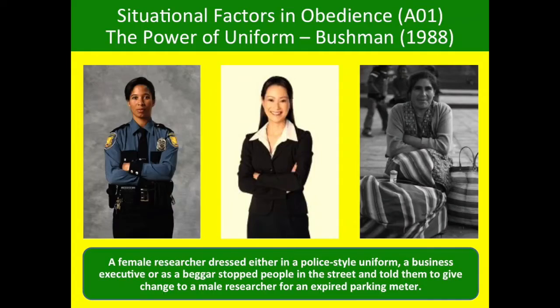A good example of this is a field experiment by Bushman in 1988. Bushman got a female researcher to dress either in a police-style uniform, as a business executive, or as a beggar, and then that person stopped people in the street and told them to give change to a male researcher for an expired parking meter. This experiment was looking at the power of uniform — do we obey people who we think are legitimate authority figures — and it's a great study to use alongside Milgram's studies to do with obedience.